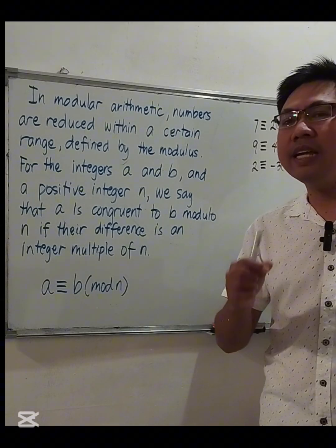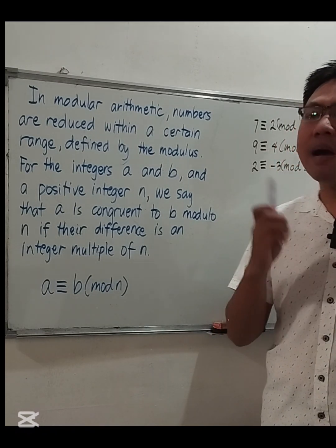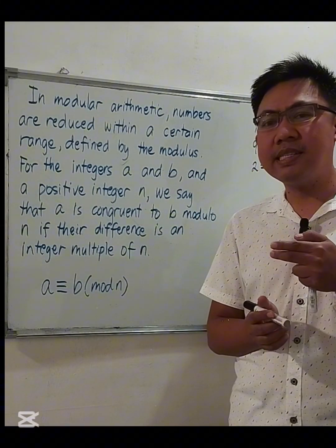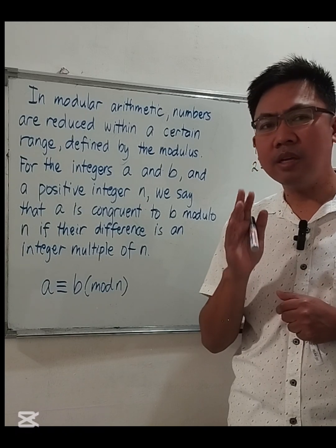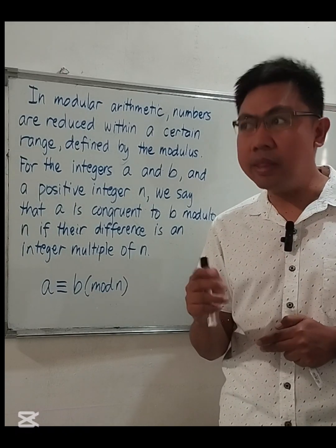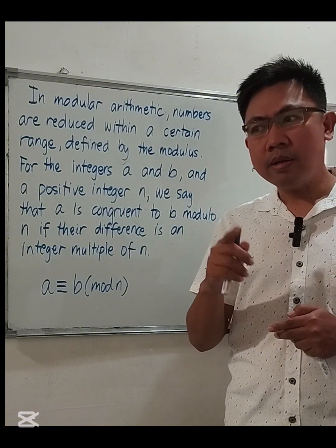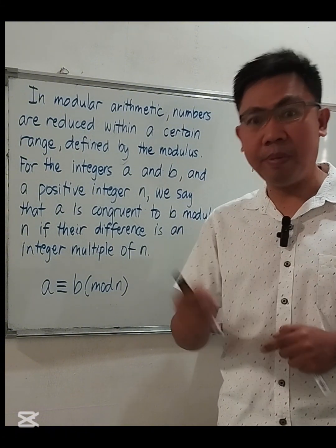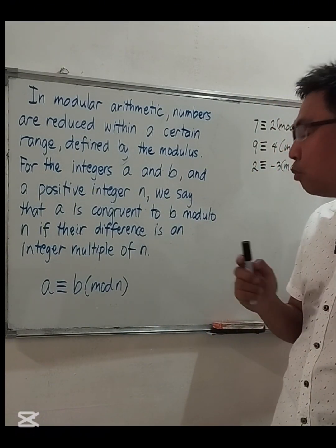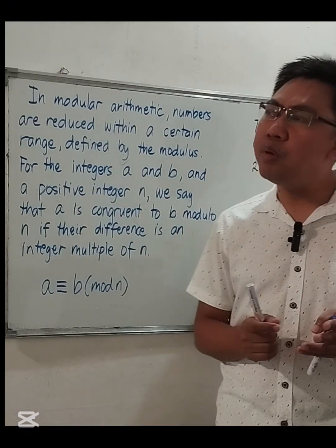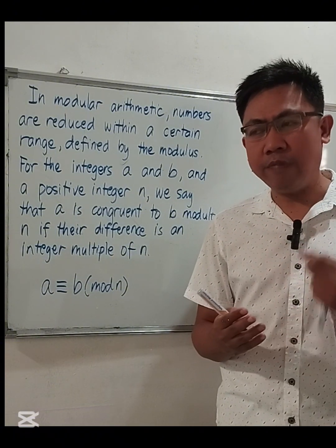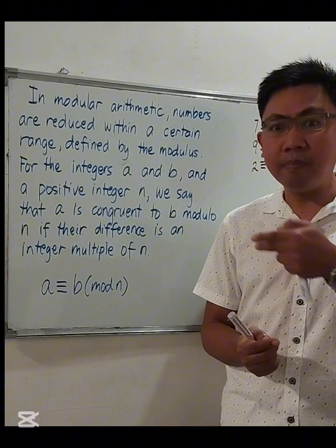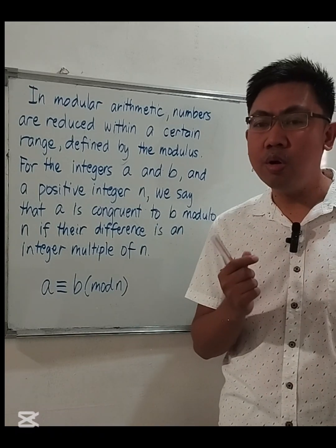In modular arithmetic, we are only interested in the remainder. An example of this is the clock. If now is 7 a.m., after 5 hours it will be 12 p.m., and then after another 1 hour the time is 1 p.m. and not 13 p.m. So the clock is under modulo 12. Another example is the days of the week. If today is Monday, after 7 days it will be Monday again — that's modulo 7.